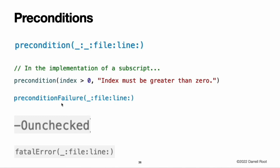You can also call the preconditionFailure function to indicate that a failure has occurred — for example, if the default case of a switch was taken, but all valid input data should have been handled by one of the switch's other cases. If you compile in unchecked mode, preconditions are not checked. The compiler assumes that preconditions are always true and optimizes your code accordingly. However, the fatalError function always halts execution regardless of optimization settings. You can use fatalError during prototyping and early development to create stubs for functionality that has not been implemented yet, by writing fatalError("Unimplemented") as the stub implementation. Because fatal errors are never optimized out, unlike assertions or preconditions, you can be sure that execution always halts if it encounters a stub implementation.